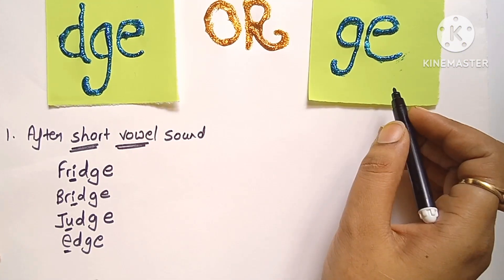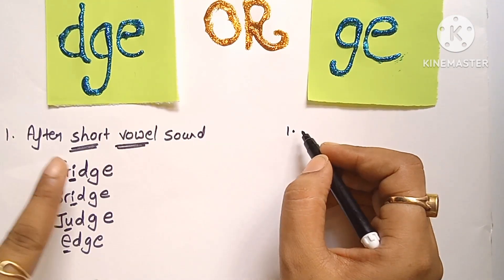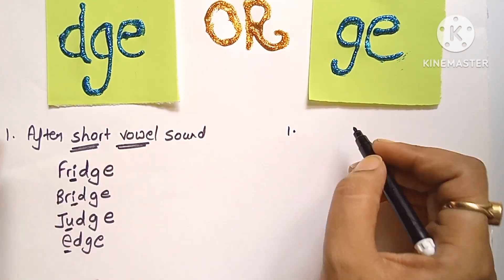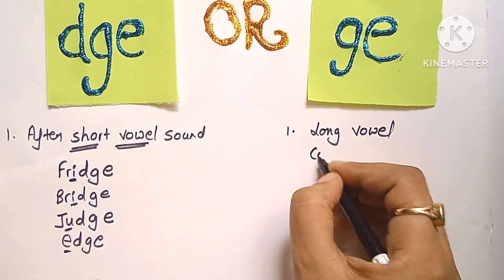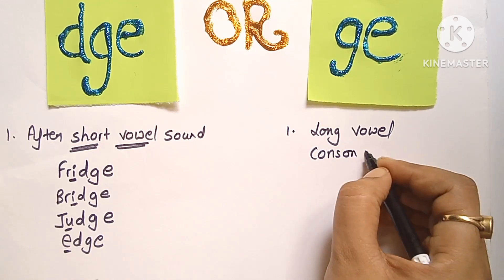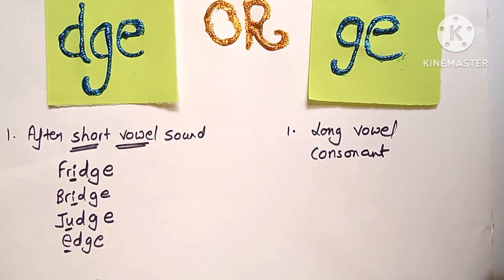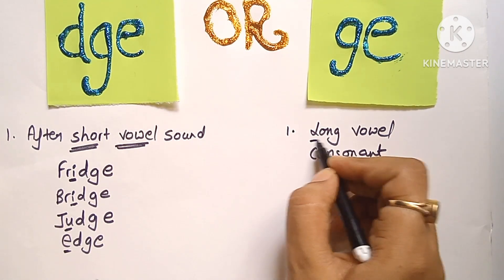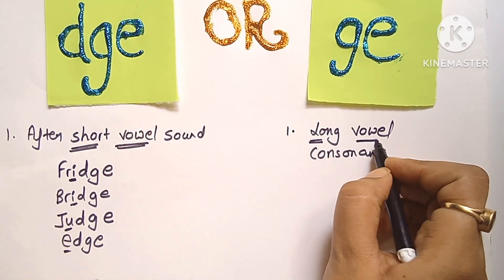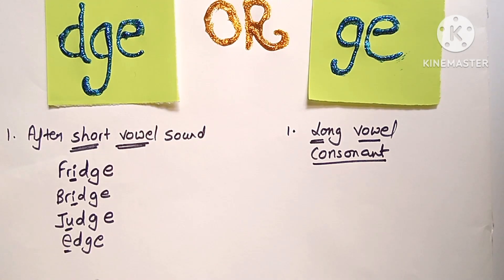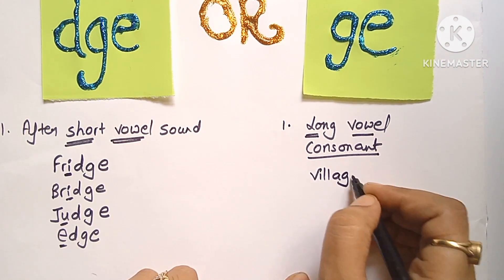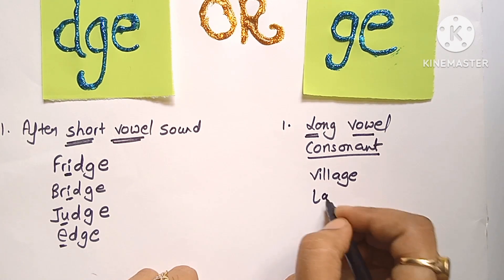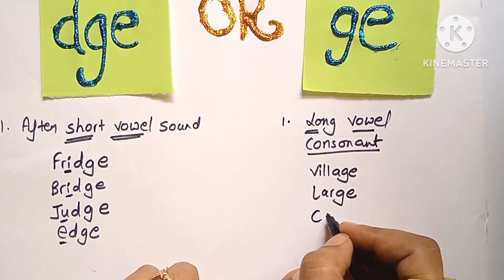Next: G, E का use हम कब करते हैं? इसका point note करेंगे. यहाँ short vowel था — right? इसमें जब vowel की sound long है या फिर कोई consonant है, दोनों ही case में आप G, E का use करते हैं. Let's say for example: village, large, cage.